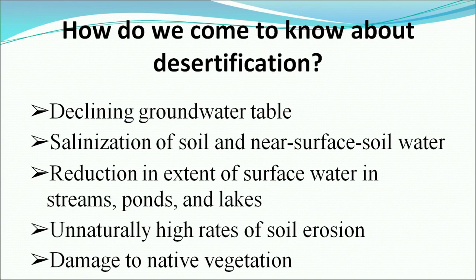Indicators of desertification include: declining groundwater table, salination of soil and near-surface soil water, reduction in the extent of surface water in streams, drying up of ponds and lakes, unnaturally high rates of soil erosion, and damage to native vegetation. All these gradually contribute to desertification.